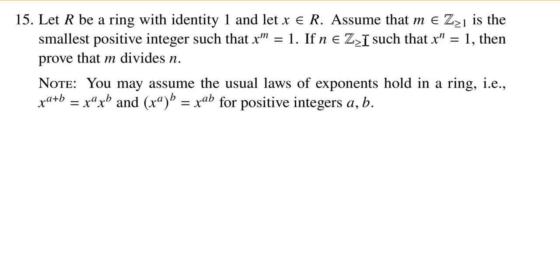Then we choose some integer n, a positive integer, which also has the property that when you raise x to that integer, you get 1. So the difference is, this one is just some positive integer, and this one was the smallest positive integer. So that's going to be a key here. This m is the smallest one. And we want to prove that m divides n.